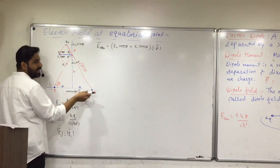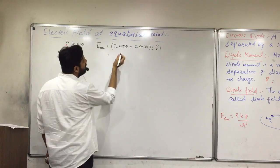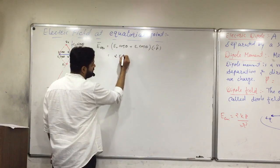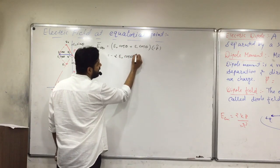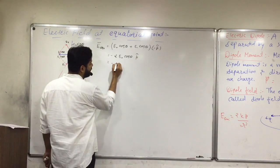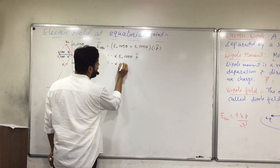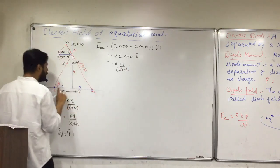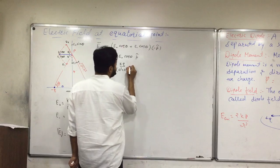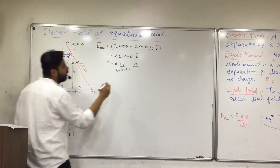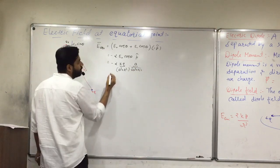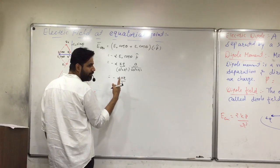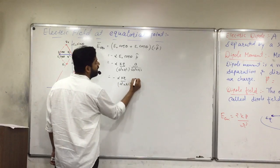Since E positive and E negative are the same, it becomes 2 times E positive cos theta into minus p-hat. That equals minus 2 times kq upon (a squared plus r squared), multiplied by cos theta. Now cos theta is adjacent over hypotenuse — adjacent is 'a', hypotenuse is square root of (a squared plus r squared). So we get minus 2kq upon (a squared plus r squared) raised to 3/2, multiplied by a.